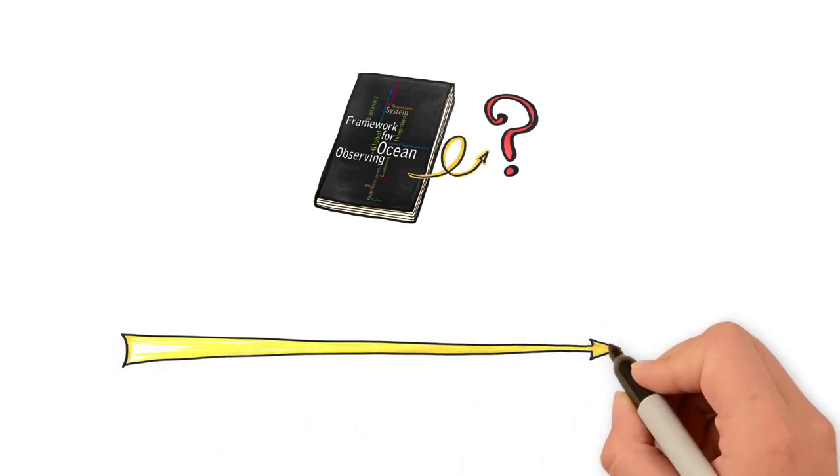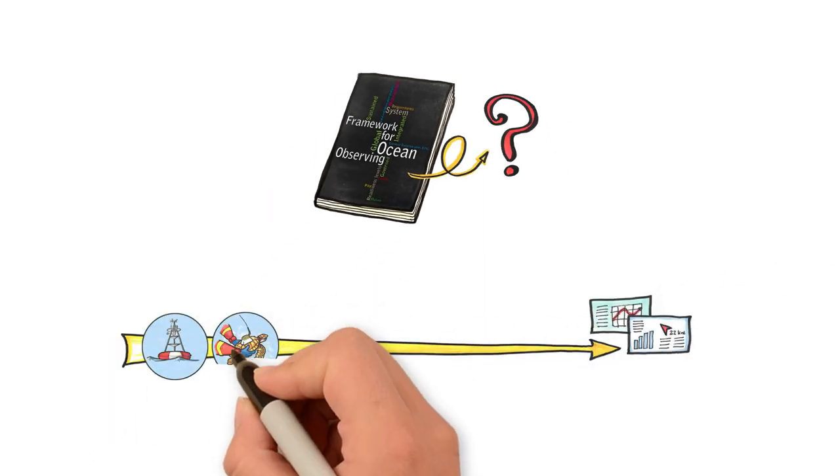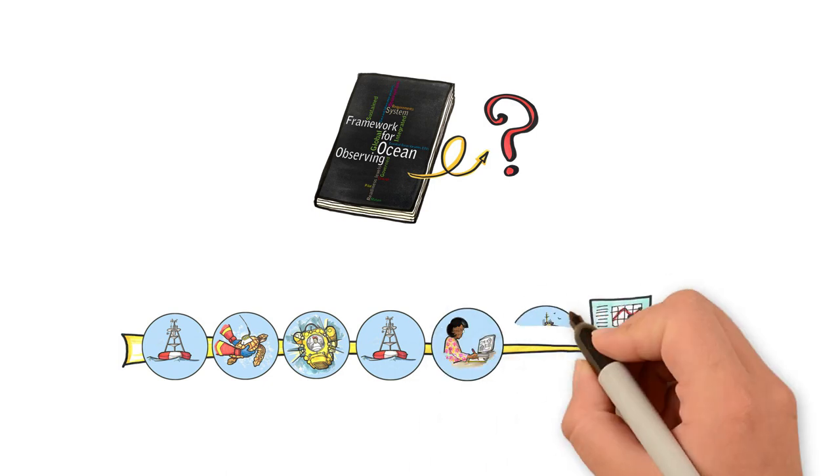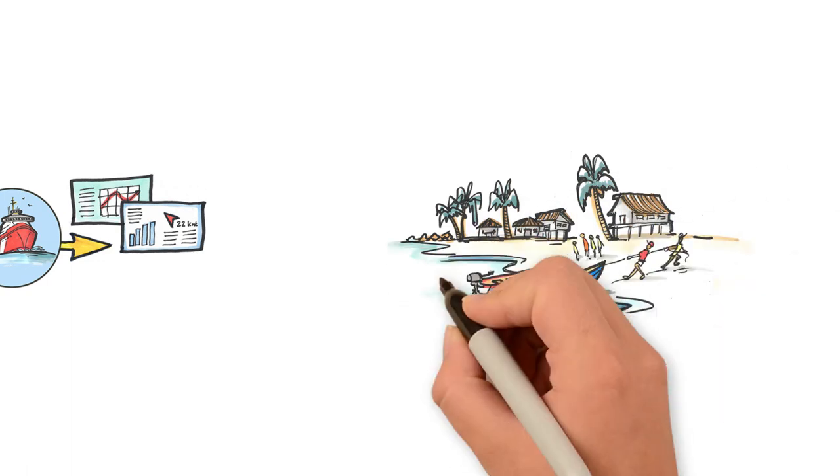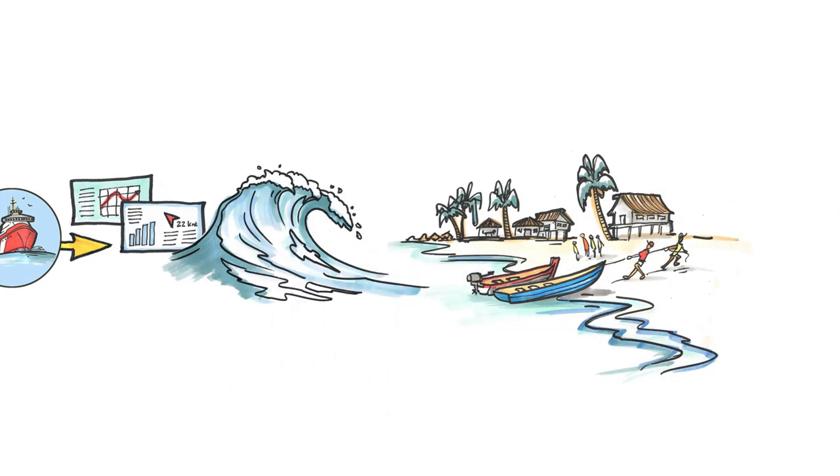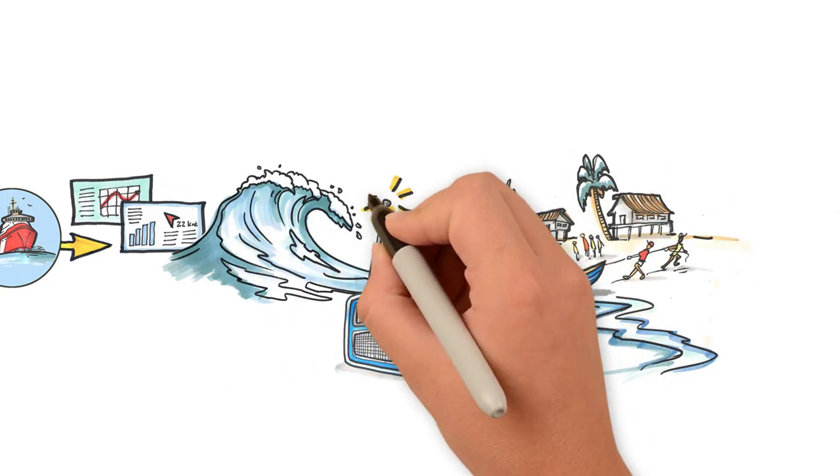We need an improved system to gain the crucial knowledge necessary to respond to significant ocean changes that are coming. For example, protecting coastal communities from storm surges by measuring tides and wave patterns.